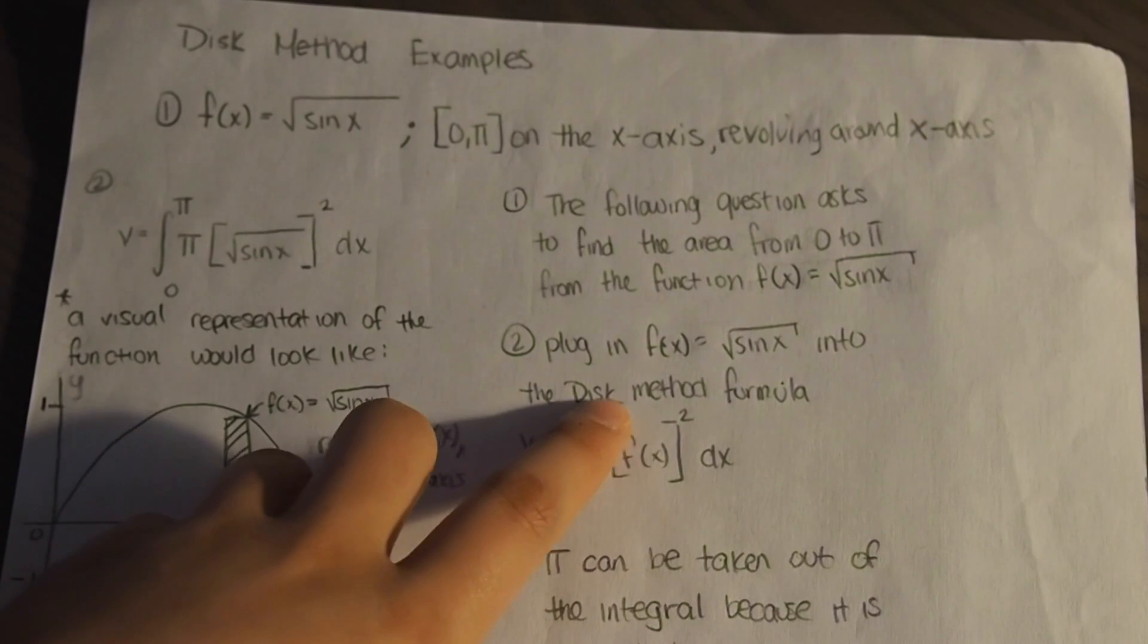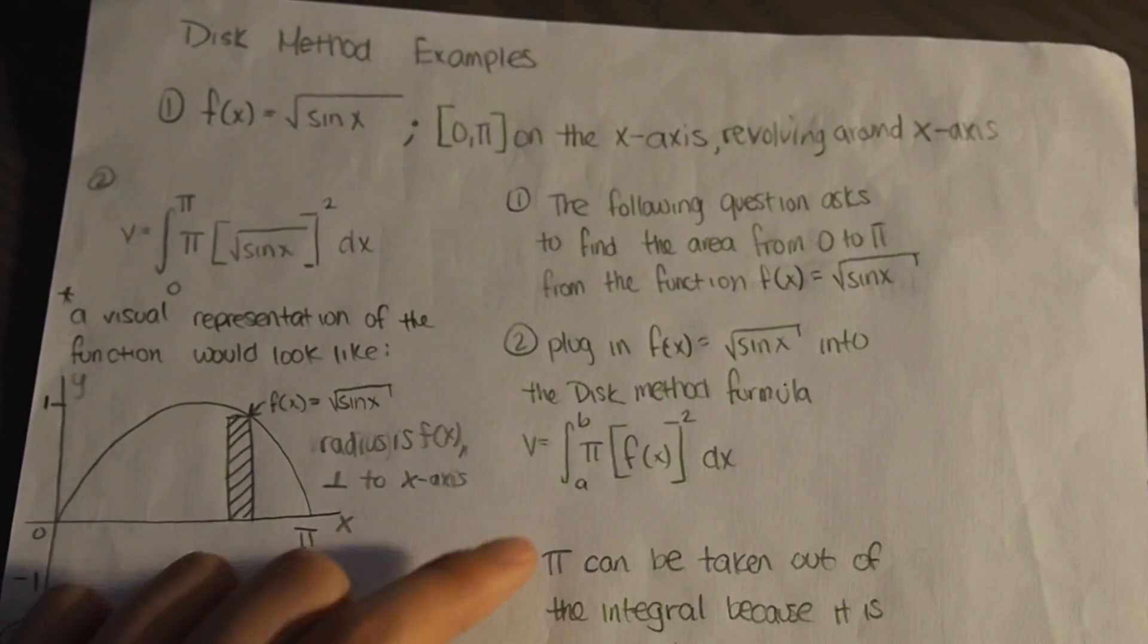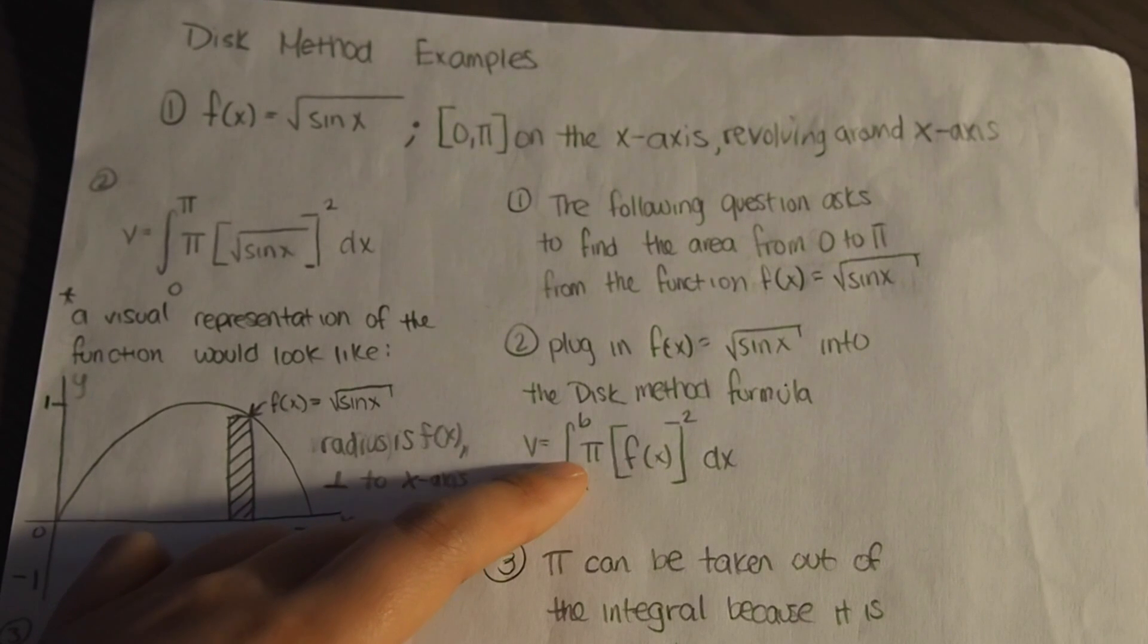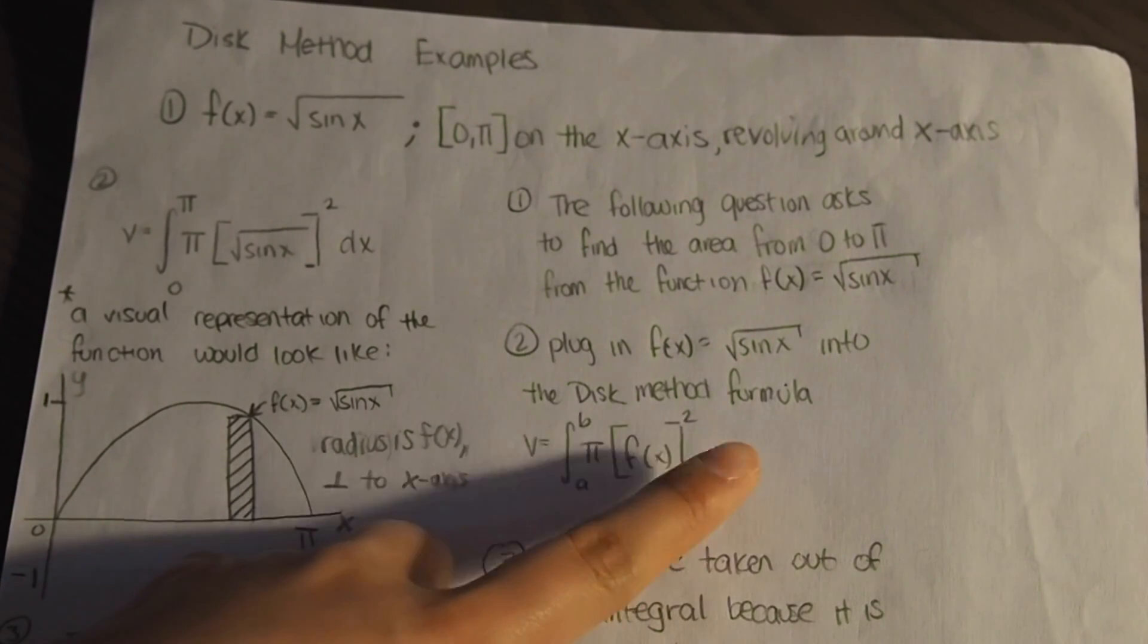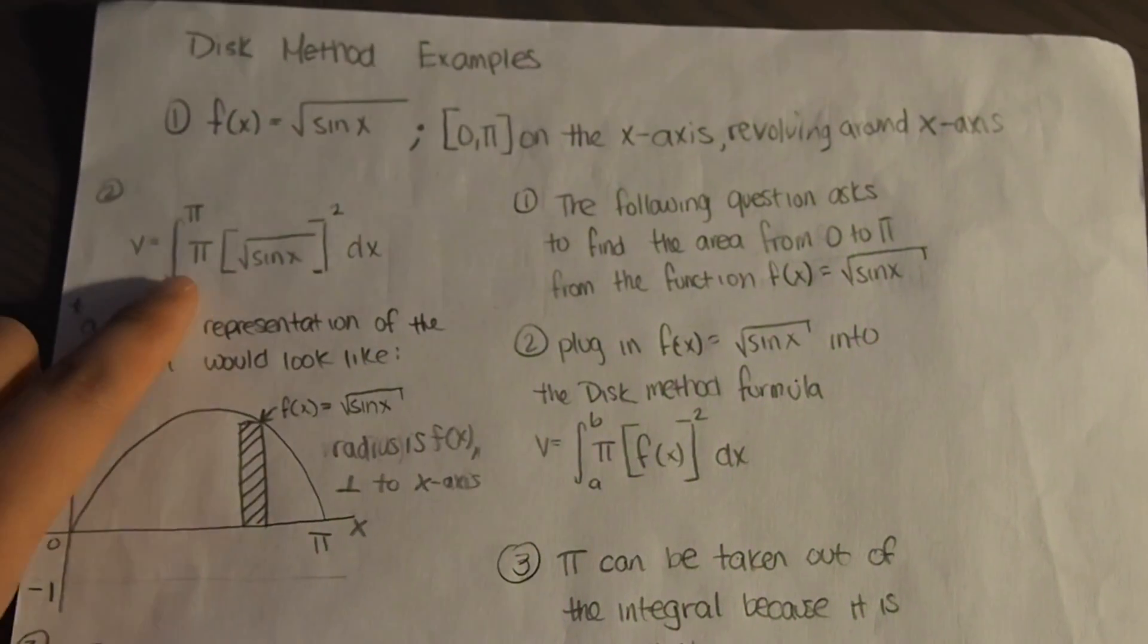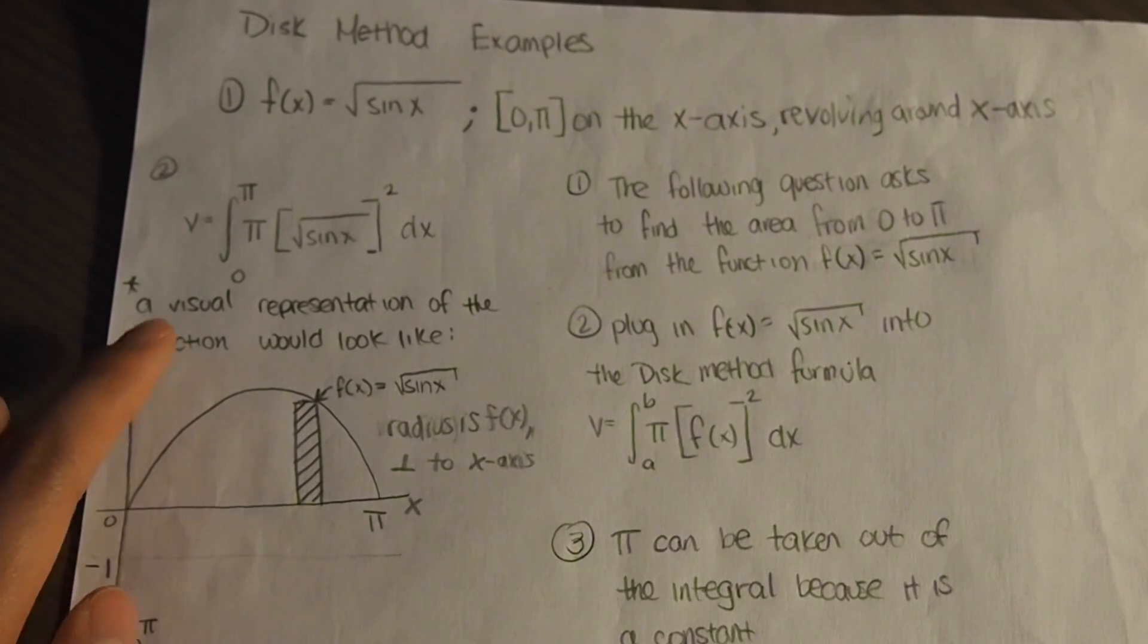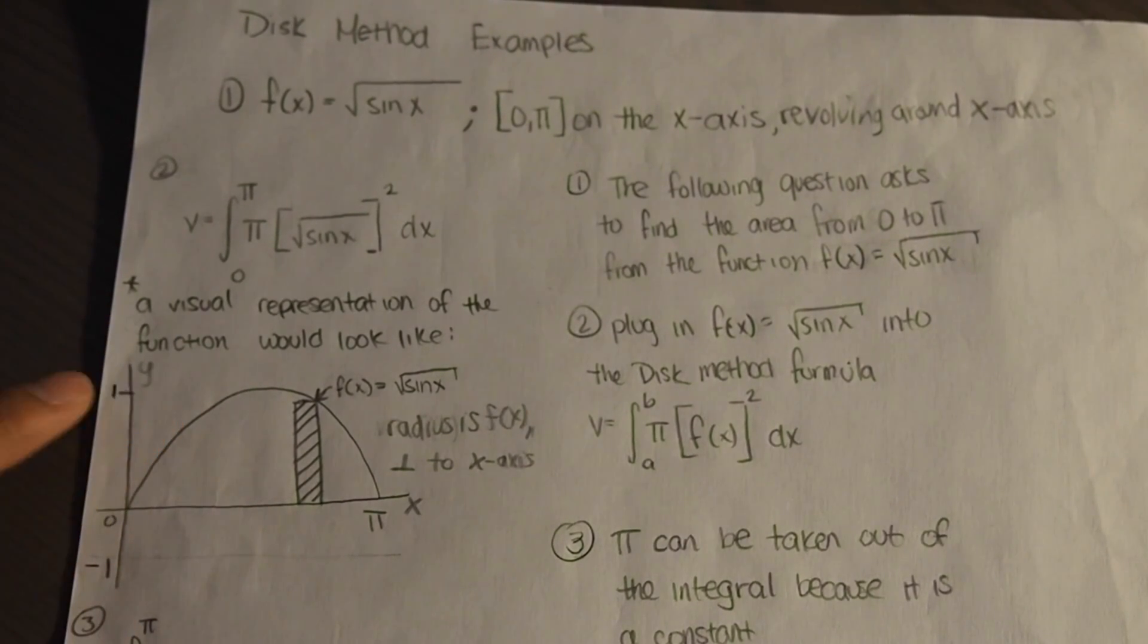After plugging it into the disk method formula of the volumes of solids of revolution, V equals integral of π f(x) squared dx, which means it's in terms of x from a to b. We plug in this square root of sin x. We'll find that this is what the visual representation of the function would look like.